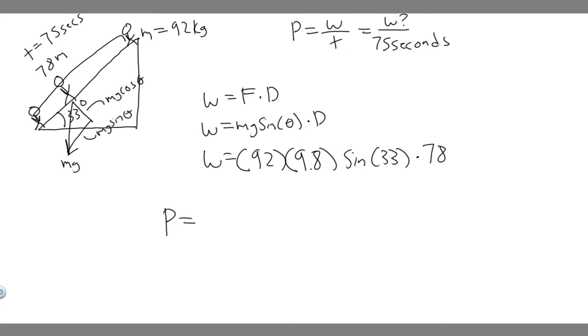Power is going to be equal to work, which is 92 times 9.8 times the sine of 33, and then multiply that by 78. And then go ahead and divide that. Power equals work, which we just calculated over time, which is 75. So if you go ahead and do this, 92 times 9.8 times the sine of 33 times 78 divided by 75, you're going to get that it equals 510.